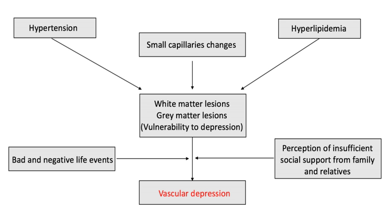Subcortical ischemic depression, also known as vascular depression, is a medical condition most commonly seen in older people with major depressive disorder. Subcortical ischemic depression refers to vascular depression specifically due to lesions and restricted blood flow, known as ischemia, in certain parts of the brain. However, the disorder is typically described as vascular depression in the literature.